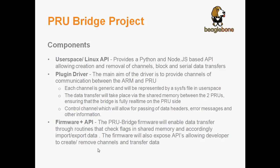Now let's look at the firmware and its APIs. The PRU Bridge firmware will basically be routines which check for flags in the control channel residing in the shared memory, and accordingly import or export data according to the will of the user. The firmware will also expose APIs which allow the developer to create or remove channels and transfer data. The Linux user space APIs will be in Python and JavaScript, and will again allow for creation and removal of channels and data transfer via the SysFS files.